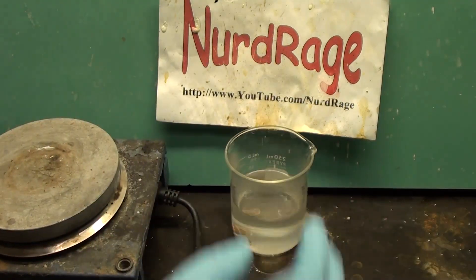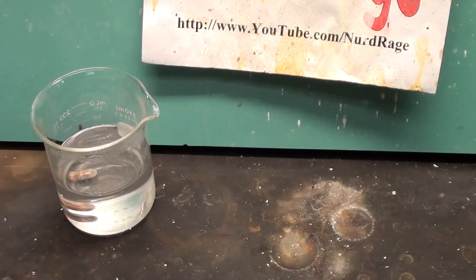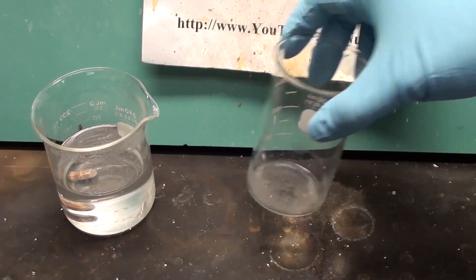When it's done, set it aside and let it cool. While that's happening, we'll build the rest of the cell. I'm going to use this 200mL beaker.